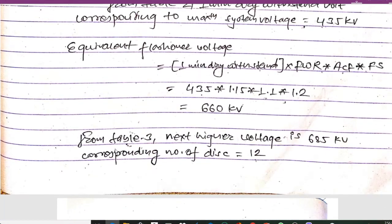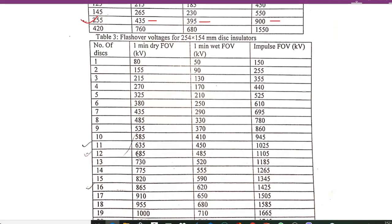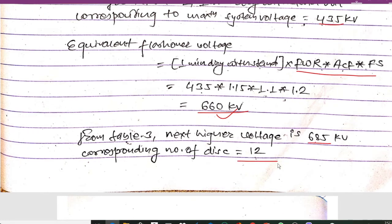The equivalent flashover voltage formula is: one-minute dry withstand standard × FWR × ACF × FS. Substituting 435 × 1.15 × 1.1 × 1.2, we get an equivalent flashover voltage of 660 kV. From Table 3, the next higher voltage above 660 kV is 685 kV, and the corresponding number of insulator discs is 26.